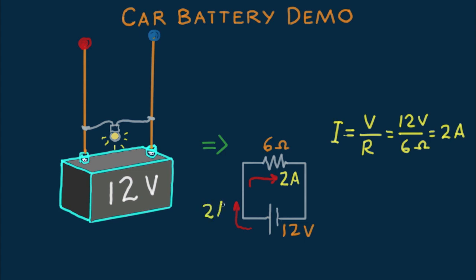The charge making up that 2 amps flows through the circuit, looping around and around, being energized each time it passes through the battery.